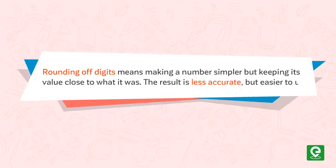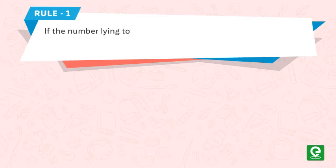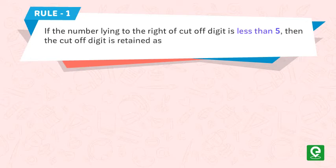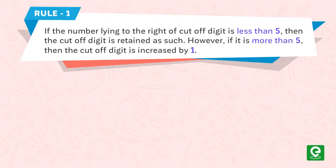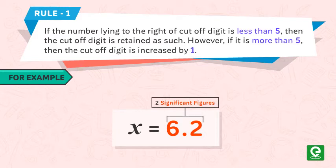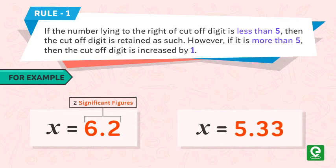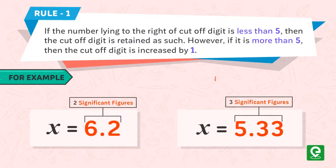The result is less accurate but easier to use. Let's understand the basic rules of rounding of digits. Rule number one: if the number lying to the right of the cutoff digit is less than five, then the cutoff digit is retained as such. However, if it is more than five, then the cutoff digit is increased by one. For example, x = 6.24 is rounded off to 6.2, which has two significant figures. And x = 5.328 is rounded off to 5.33, which has three significant figures, because 8 is greater than five, so the cutoff digit is increased by one.